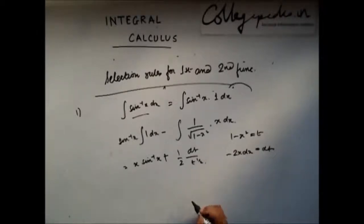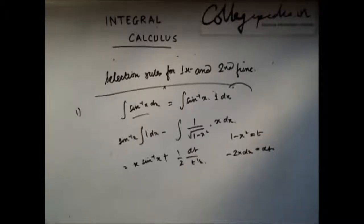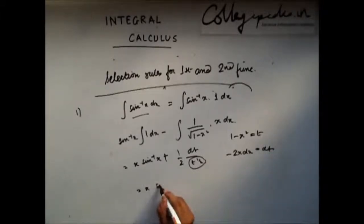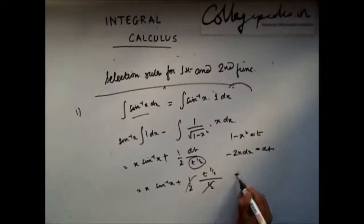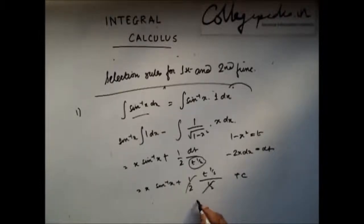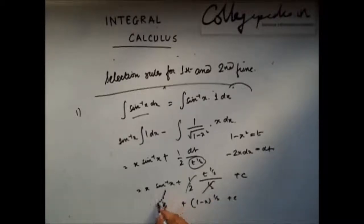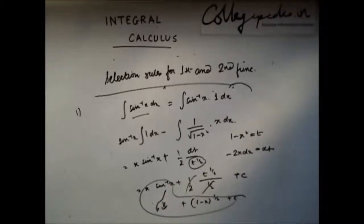Now integrate this. Following the basic formula of integration, the halves cancel, and the solution is x sine inverse x plus t to the power half, which simplifies to the final answer. So this is the solution for sine inverse x.